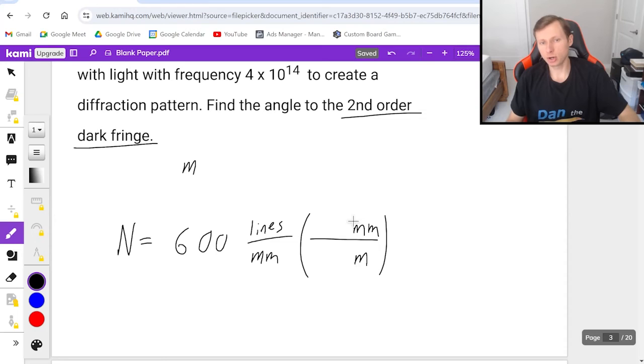But how many millimeters are in a meter? Well, hopefully you know this. 1,000 or 10 to the third millimeters are in one meter. So I'm essentially just multiplying this by 1,000, which ends up being 6 times 10 to the fifth power.